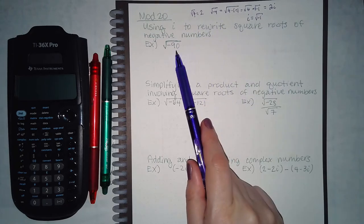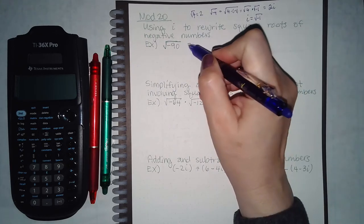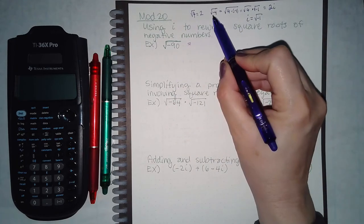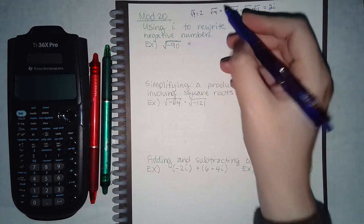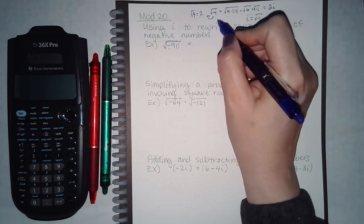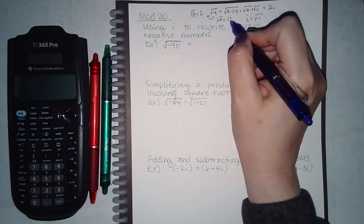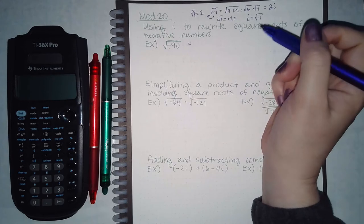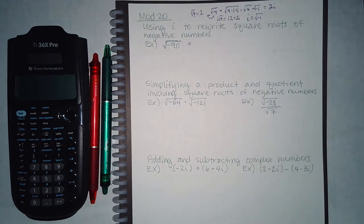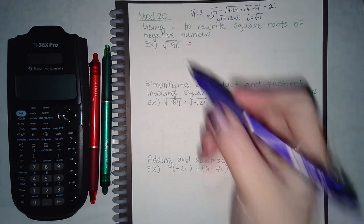The examples work the same way. As a shortcut, if you want to take the negative out, it becomes an i, and then the square root of 4 is 2. In math we like to have the coefficient in the front, so this becomes 2i. That's a little bit faster than breaking up the root.